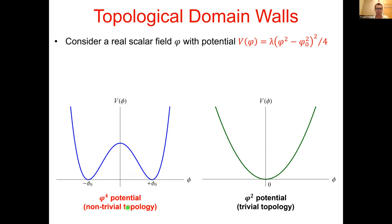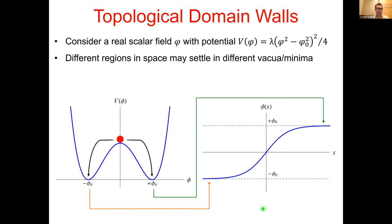The vacuum state is not unique in this case, and therefore this type of potential supports non-trivial topology. By contrast, a simple harmonic potential has only a single minimum, corresponding to a trivial topology. With the quartic potential produced at some point in the early universe, if the scalar field starts off near the top of the barrier, there is roughly a 50-50 probability for it to end up in the left-handed or right-handed minimum.